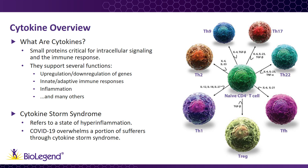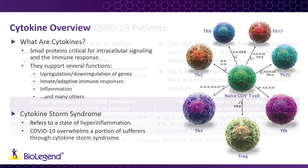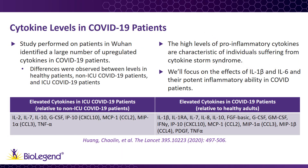COVID-19 has been shown to overwhelm a subset of infected patients through the propagation of a cytokine storm. Several studies have investigated the levels of various cytokines in patients suffering from COVID-19. One study from Wuhan, China looked at the plasma level of several cytokines in COVID-19 patients in both the ICU and non-ICU hospitalization states and compared their cytokine levels with normal ranges.